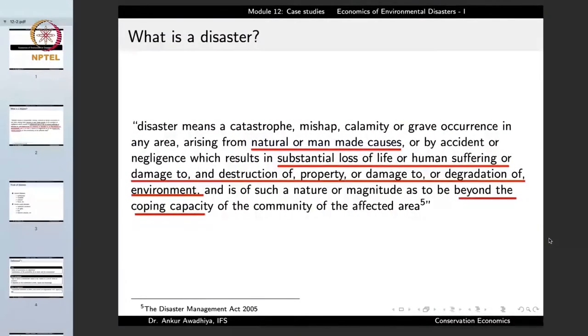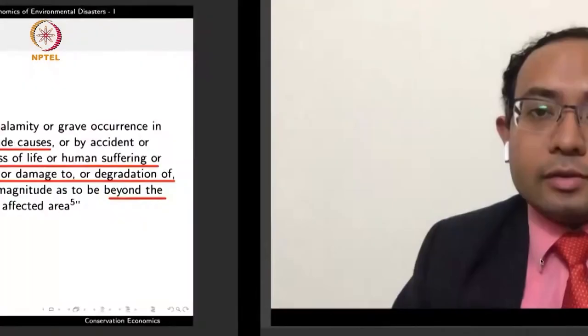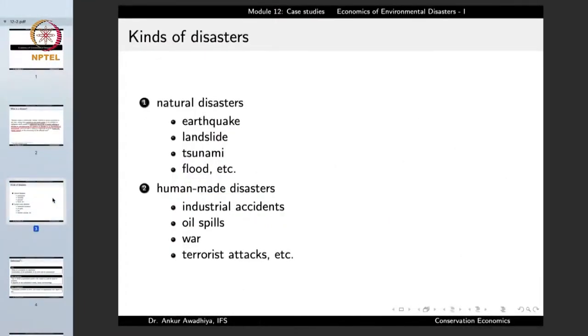In certain cases people might get sick or injured — so even though they are not dead, the disaster leads to a huge amount of human suffering from disease or injury. There might also be destruction of property or the environment. These occurrences are of such a nature and magnitude as to be beyond the coping capacity of the community of the affected area. Disasters can be natural — earthquakes, landslides, tsunami, floods — or human-made, such as industrial accidents, oil spills, war, and terrorist attacks.